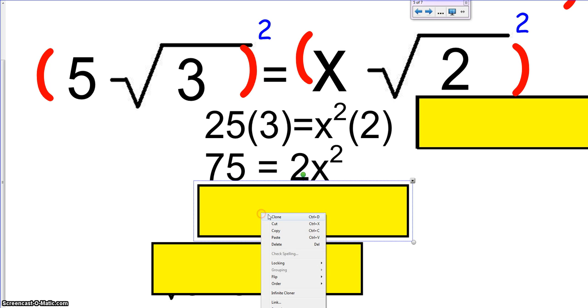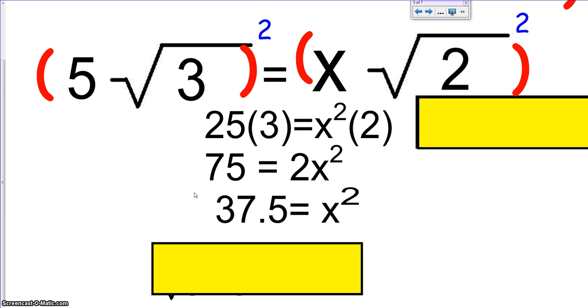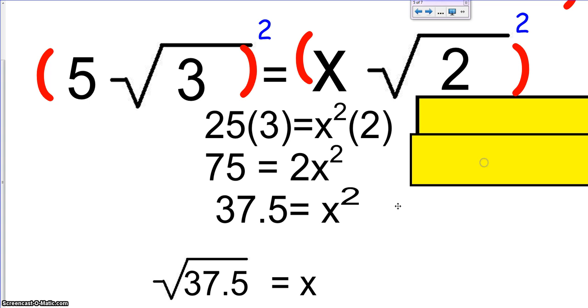We just want to go through and solve. Now, I do get a decimal here, but because it's a terminating decimal, meaning it's not repeating, and it's not irrational, where it kind of has weird, unrepeating numbers, I'm going to leave it alone as it is. That means when I get my final answer, the answer is x equals square root of 37.5.